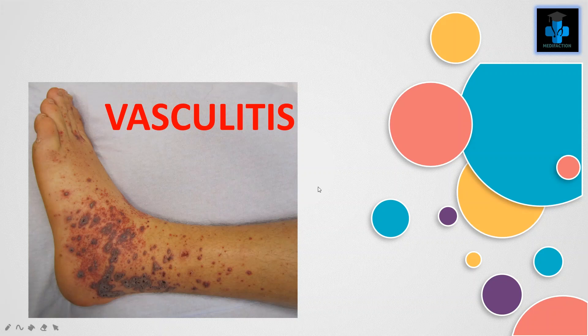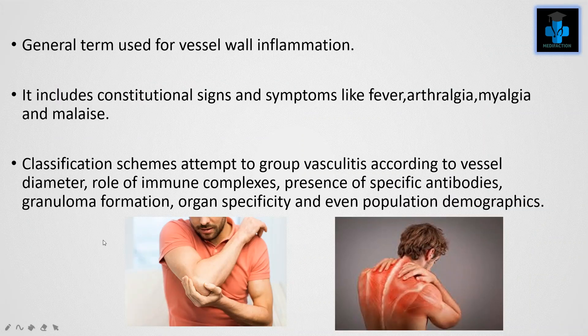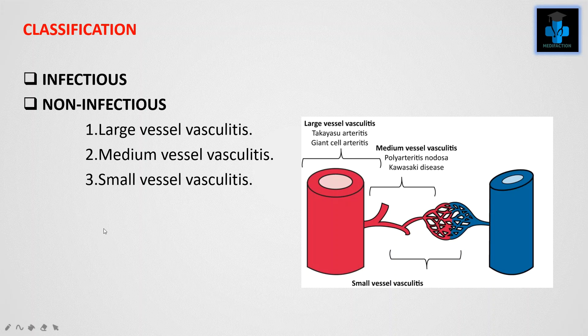Welcome to Medifaction. Today let's learn about vasculitis. Generally, the term vasculitis is used for vessel wall inflammation. It includes constitutional signs and symptoms like fever, arthralgia, myalgia, and malaise. Classification schemes attempt to group vasculitis according to vessel diameter, role of immune complexes, presence of specific antibodies, granuloma formation, organ specificity, and population demographics. Here we are classifying vasculitis into infectious and non-infectious, and we will be stressing on non-infectious.